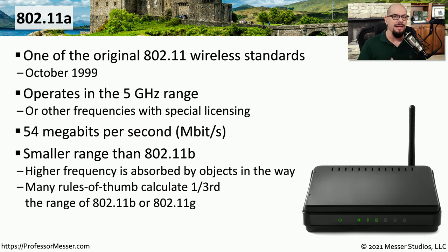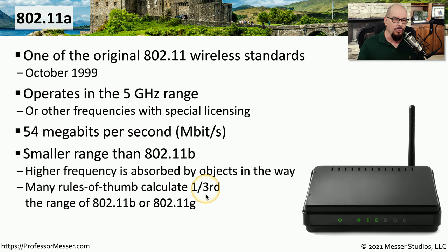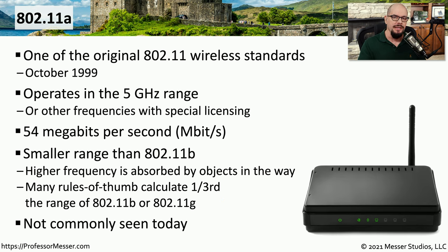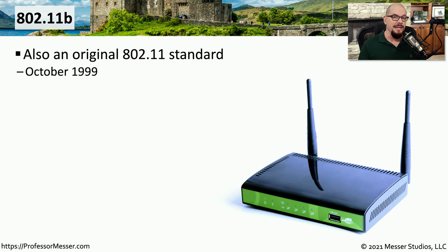802.11b is a different standard operating at 2.4 gigahertz. A good rule of thumb is that something operating at 5 gigahertz has about one-third the range of 2.4 gigahertz technologies. This is obviously a rule of thumb because there are so many different variables involved in determining the range of a wireless network. 802.11a is not commonly seen in use on today's networks.